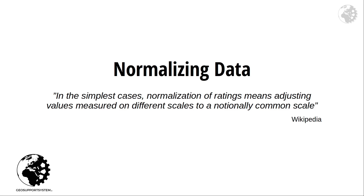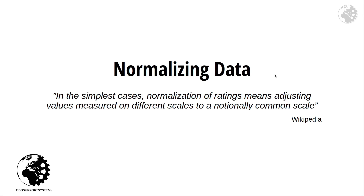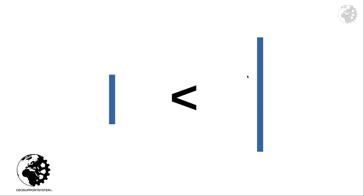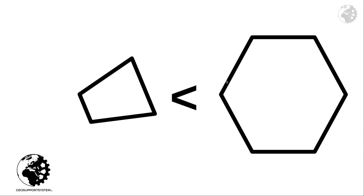Let me take some examples. Numerical values are pretty easy to see the difference — the number six is clearly bigger than the number three. Using another scale, length: one line is clearly longer than the other. And the same is true of area — one area is clearly bigger than the other.